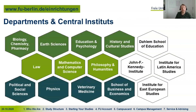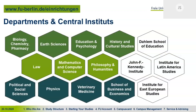The university is divided into different departments and central institutes, which is important because each department has its own regulations and study offices. You ought to know at which department you study. It's a bit like a state — we have 11 different departments. For example, if you study Sprache und Gesellschaft, you'll be at the Department of Philosophy and Humanities; if you study the SCAN master, you'll be at Education and Psychology.